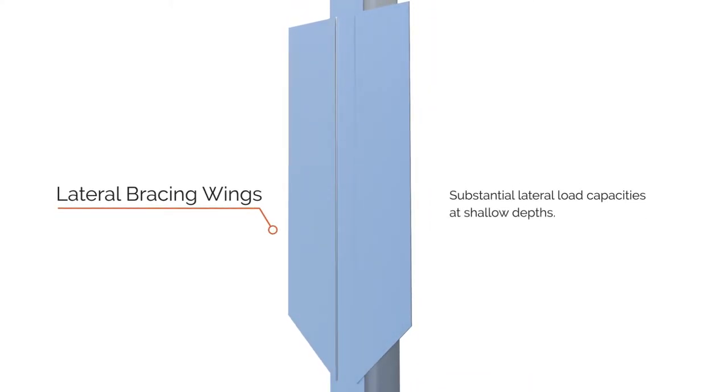The pile's bracing wings, on the other hand, mobilize an enlarged area of soil around the pile to provide the necessary lateral capacity to resist extreme wind forces that may be incurred on the attached structures.